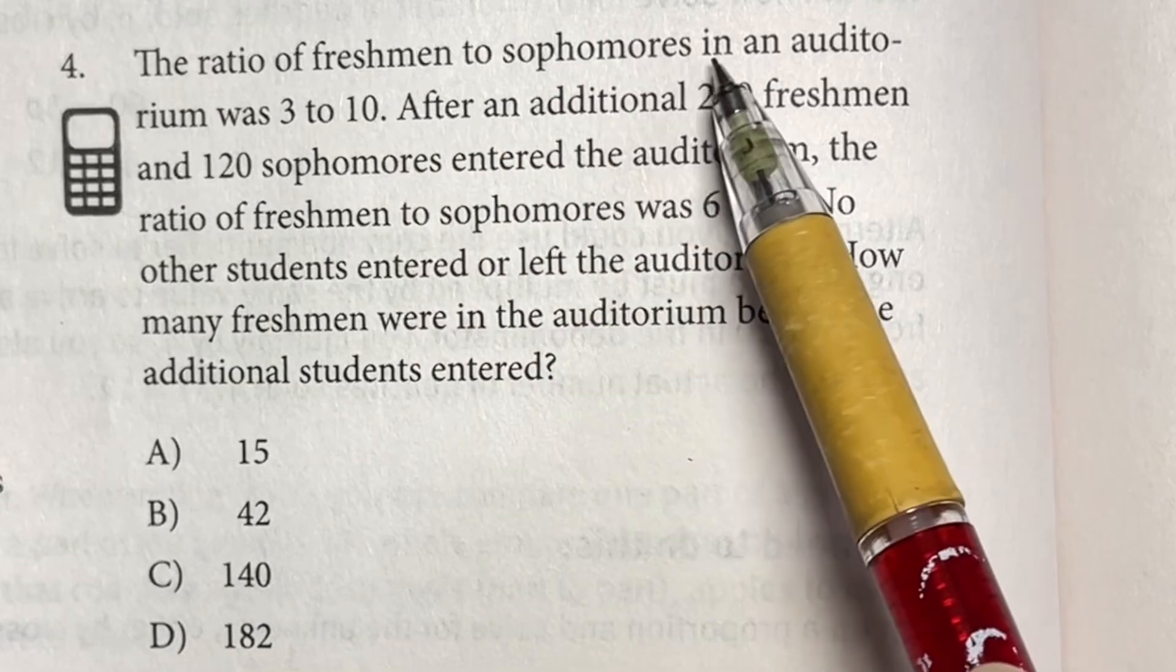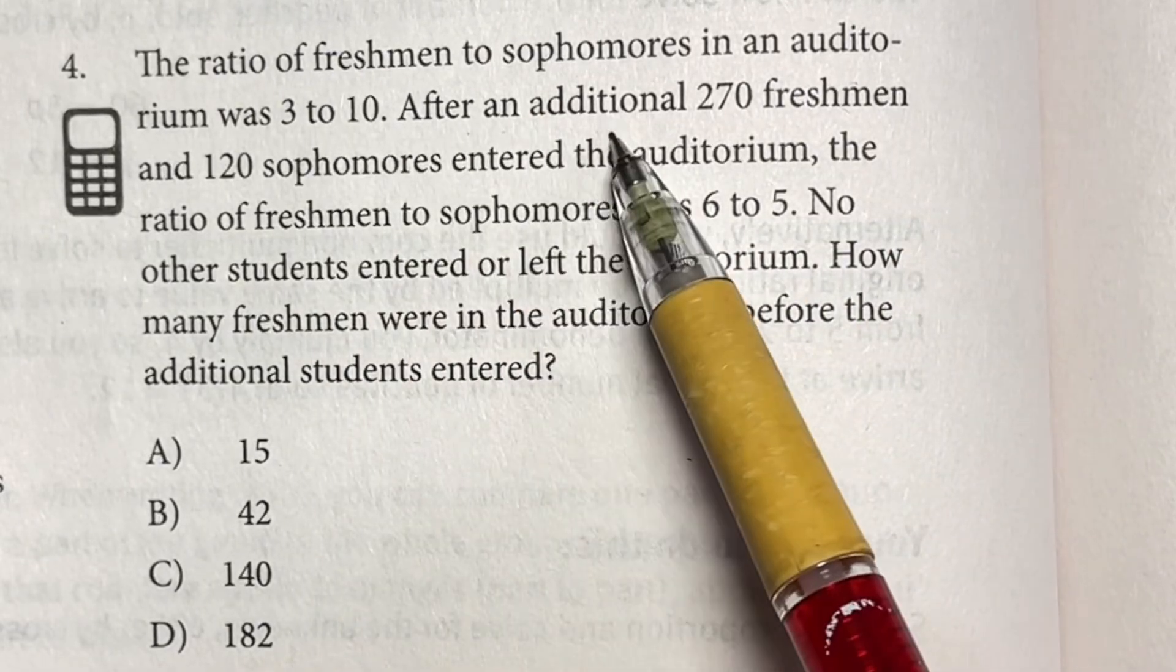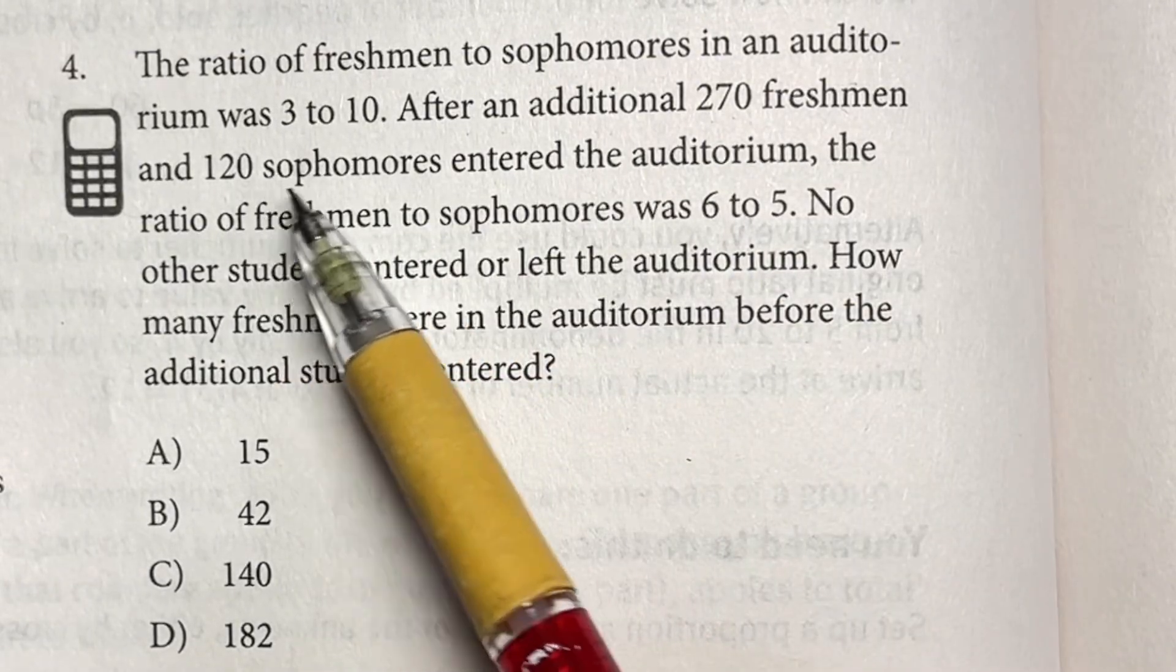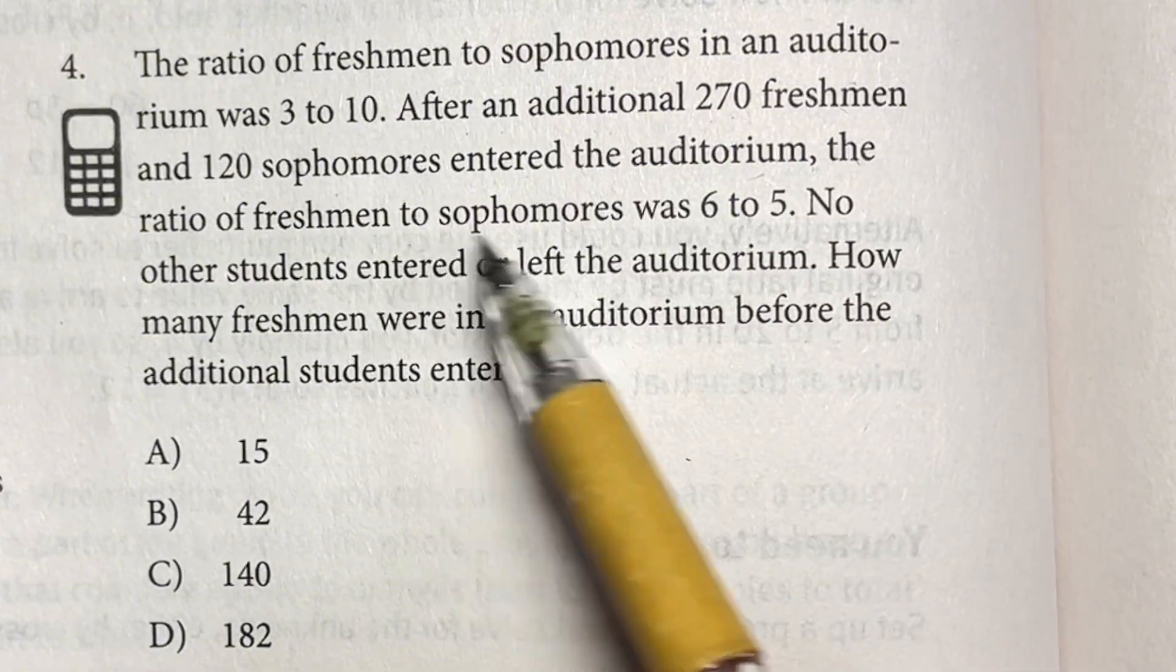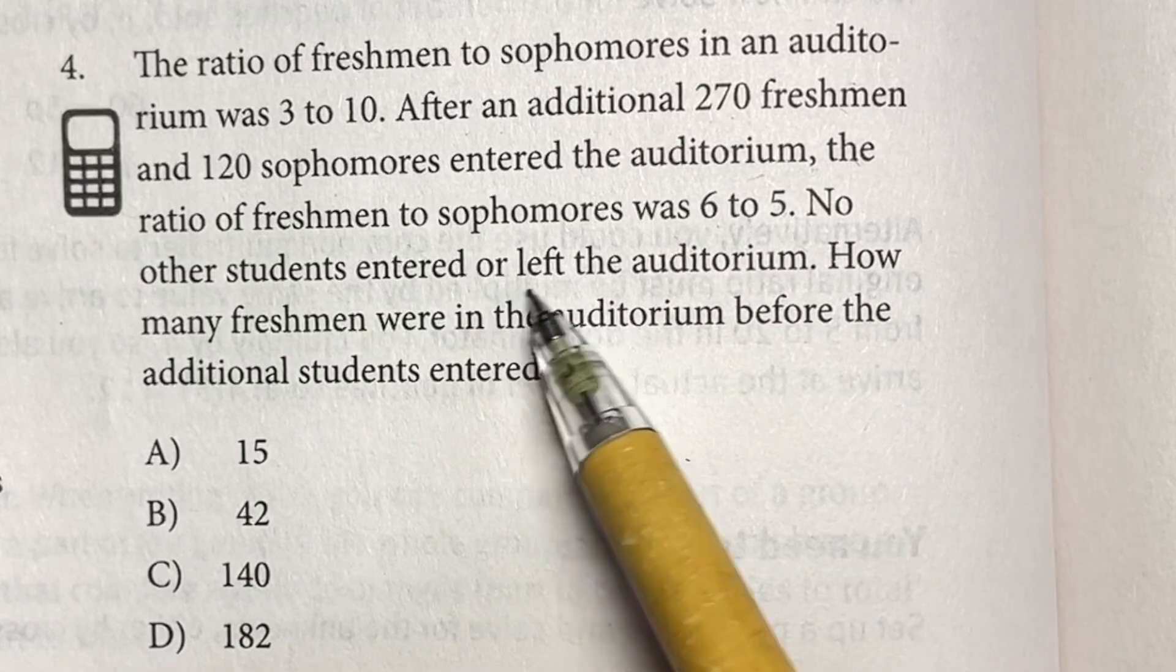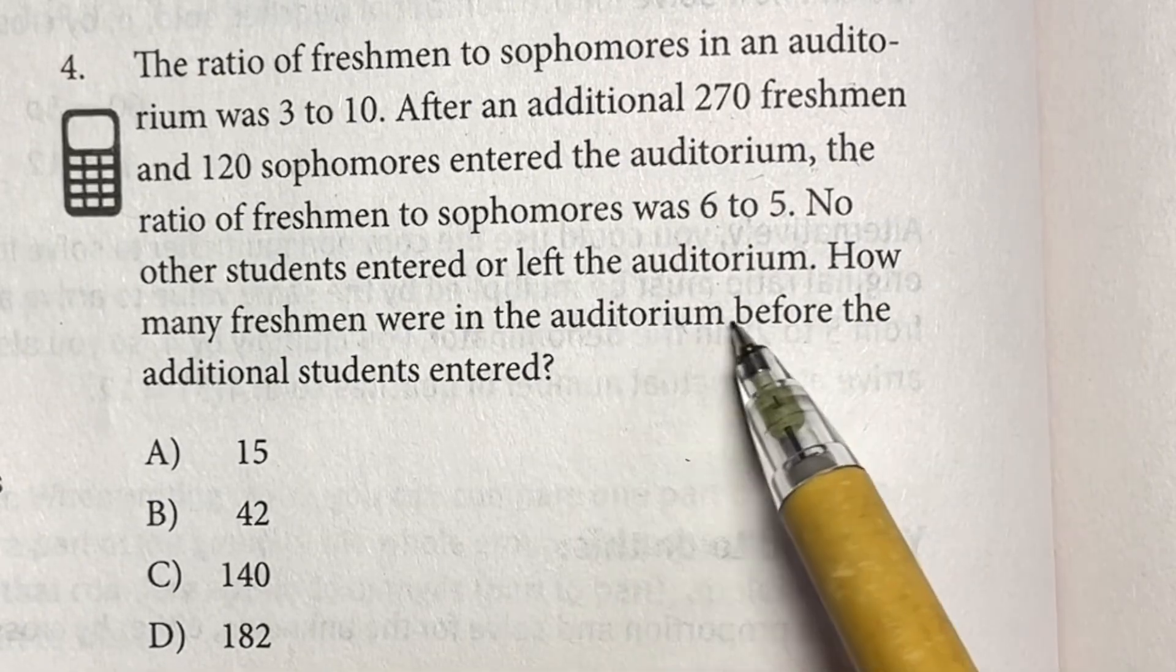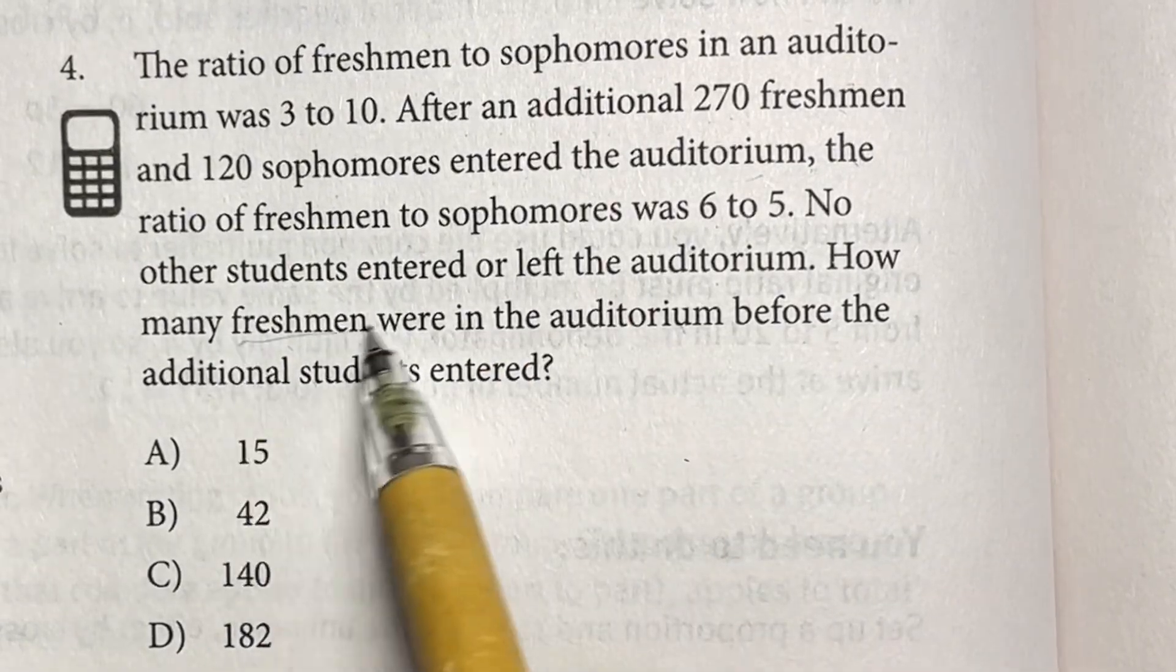The ratio of freshmen to sophomores in an auditorium was 3 to 10. After an additional 270 freshmen and 120 sophomores entered the auditorium, the ratio of freshmen to sophomores was 6 to 5. No other students entered or left the auditorium. How many freshmen were in the auditorium before the additional students entered?